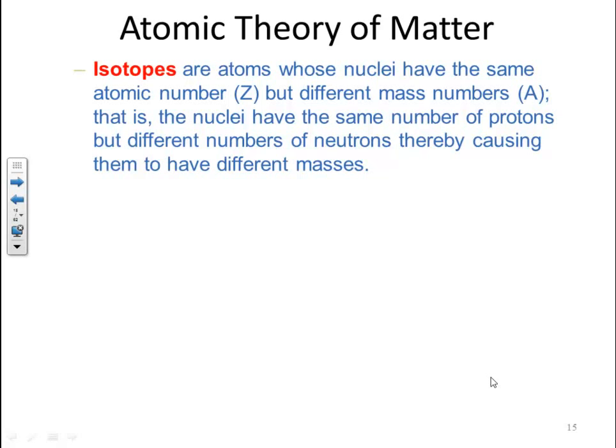Remember, this is why Dalton's postulate number 2 failed. You have a different number of neutrons and a different mass. This gets us to the term isotopes.